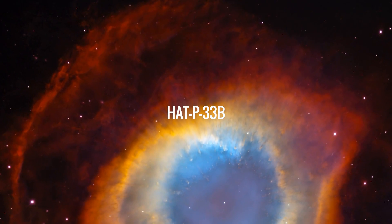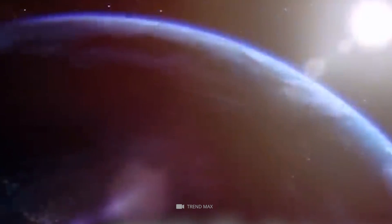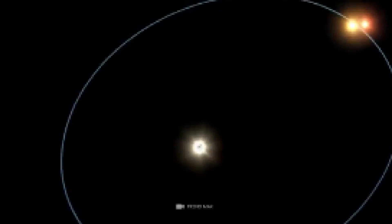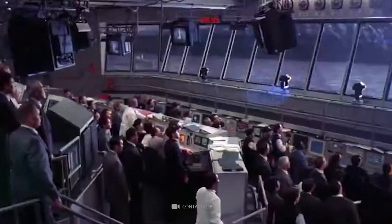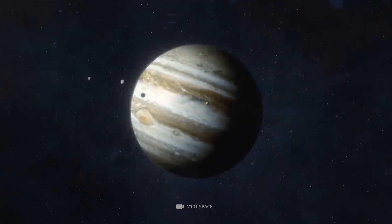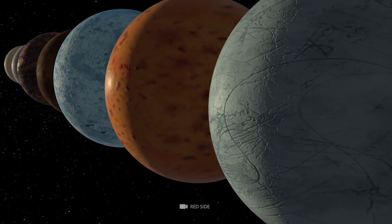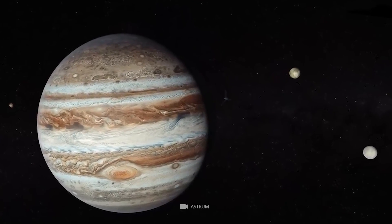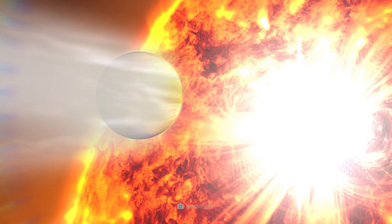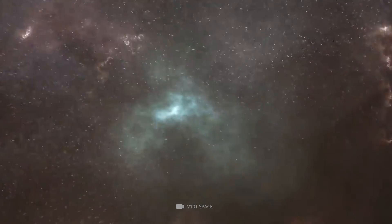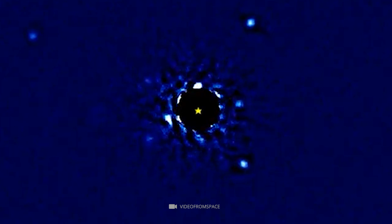HAT-P-33b is a gas giant exoplanet located 1,310 light-years away from Earth. Discovered in 2011, it has become one of the most studied exoplanets. At a radius 1.3 times that of Jupiter, it is considered among the largest known planets, with an estimated mass 14 times greater than Jupiter's. Observations suggest that its atmosphere mainly consists of hydrogen and helium, with cloud layers composed of silicate dust particles.